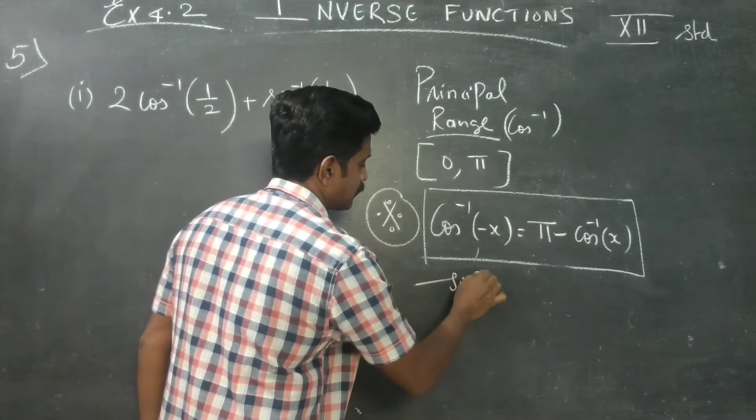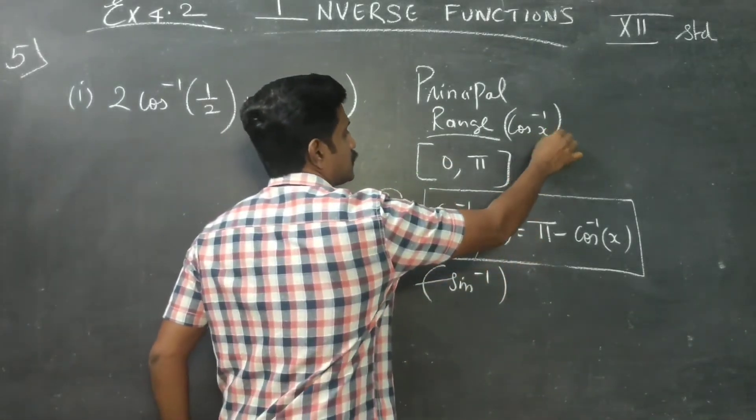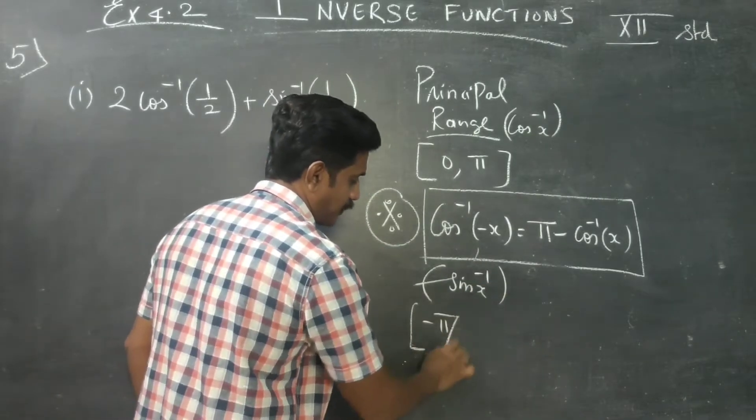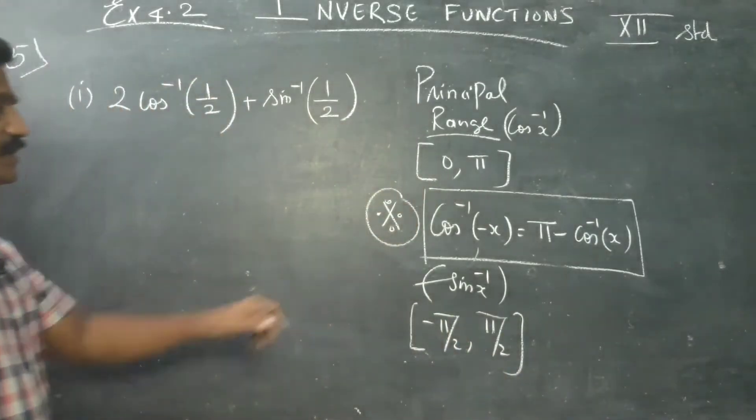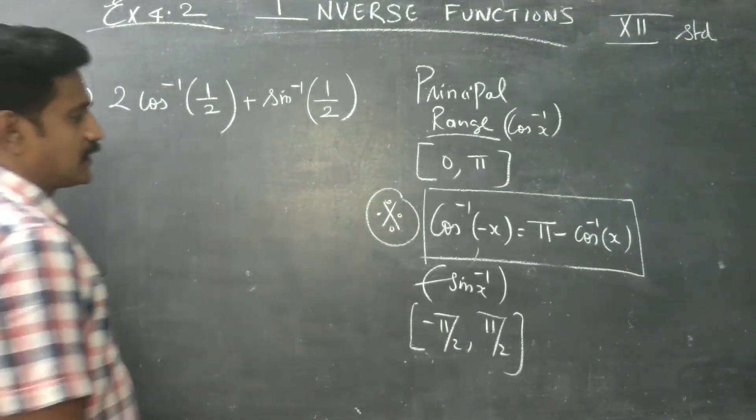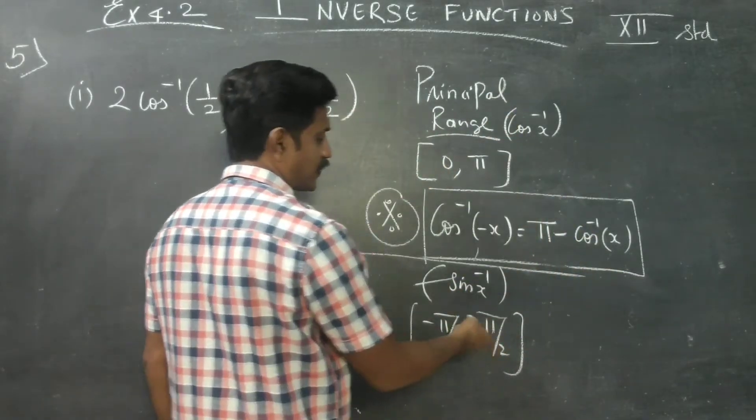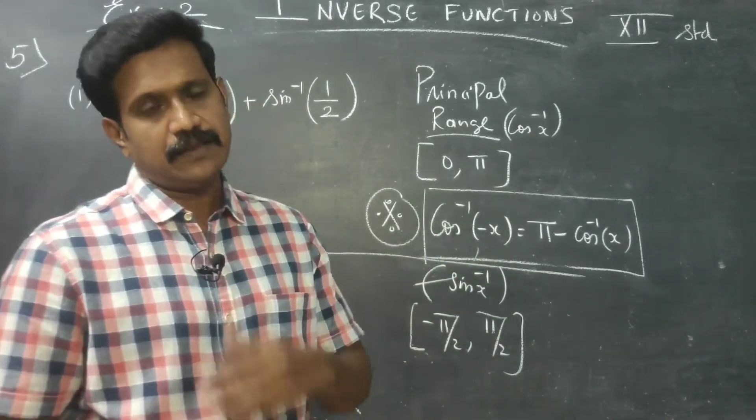What is principle range for sin inverse? The range for sin inverse of x is between minus pi by 2 to plus pi by 2. This is the range for sin inverse. This is for cos inverse and this is for your sin inverse. Sin inverse values minus 90, plus 90.